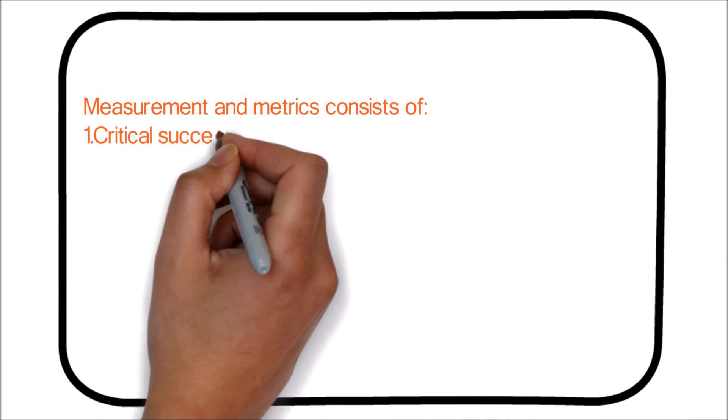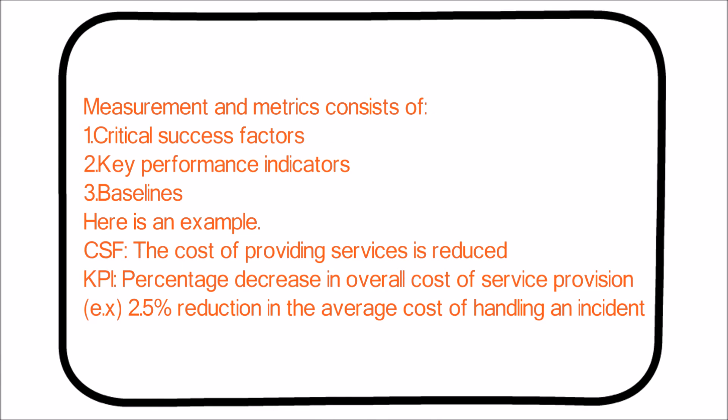Measurement and metrics consist of three elements: critical success factors, key performance indicators, and baselines. For example, a CSF might be that the cost of providing services is reduced. The corresponding KPI would be the percentage decrease in overall cost of service provision, such as a 2.5% reduction in the average cost of handling an incident.